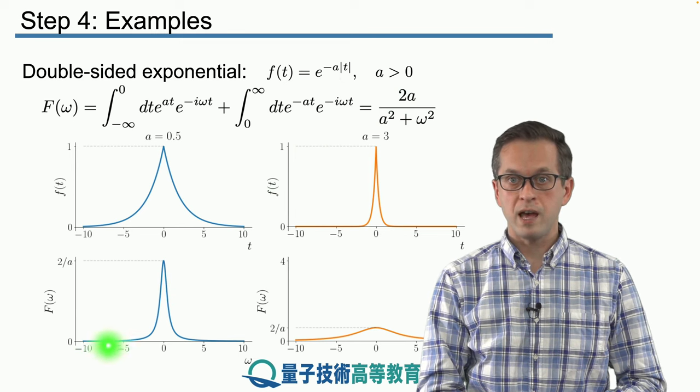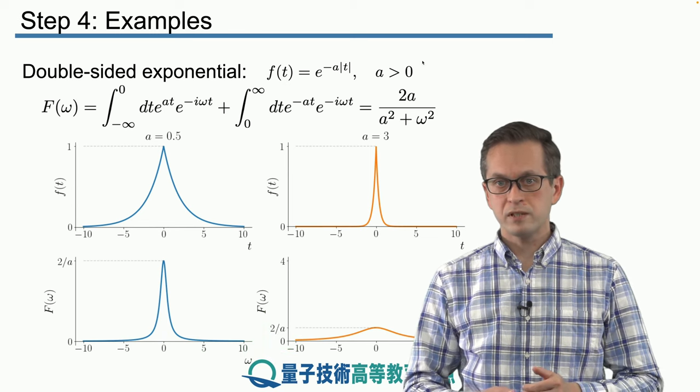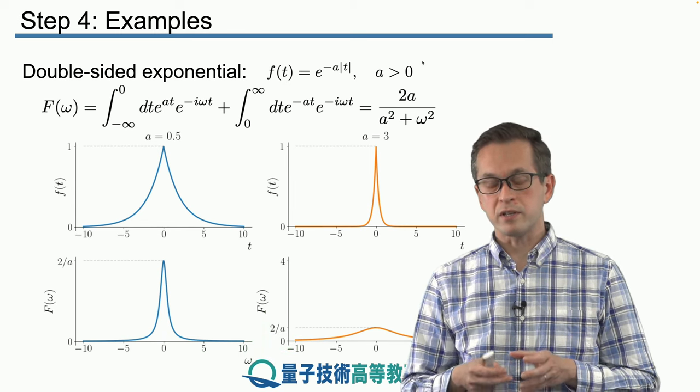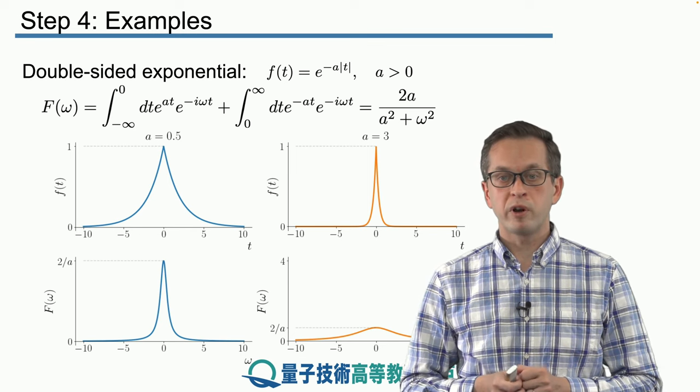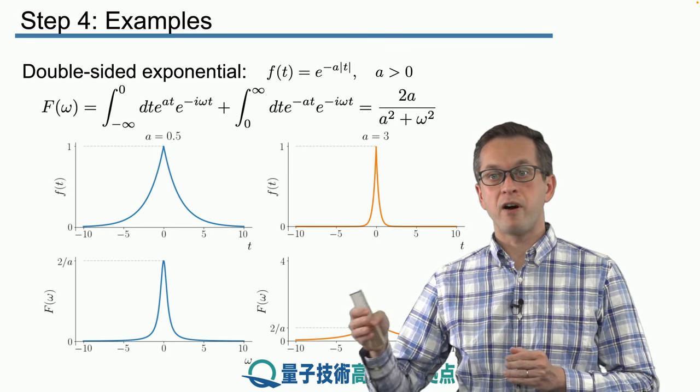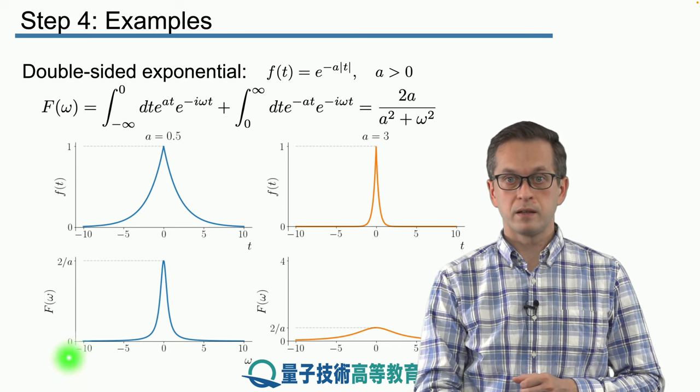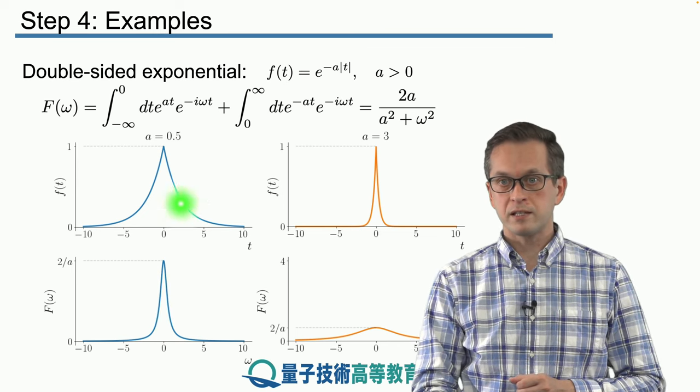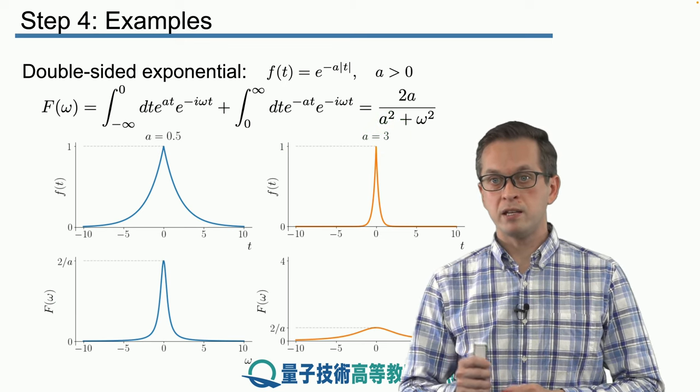In the case when a is a half, we obtain the following spectrum. What this really tells us is that the frequencies, which are around omega equals to zero, are a lot more important than the frequencies that are far away from omega equal to zero.